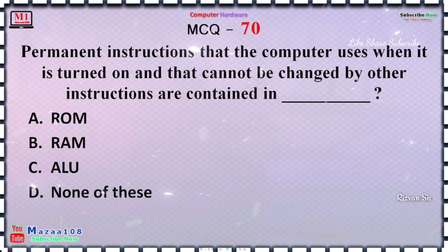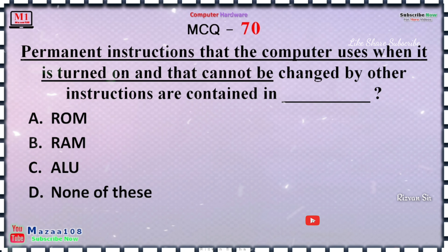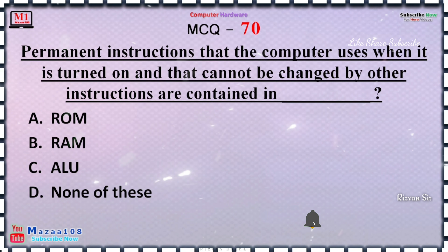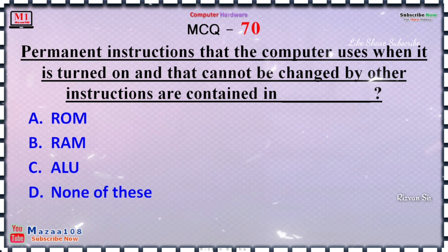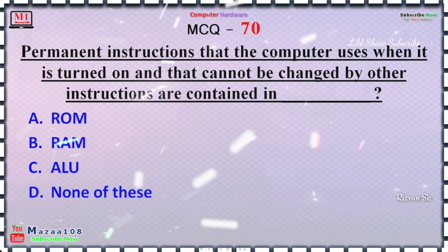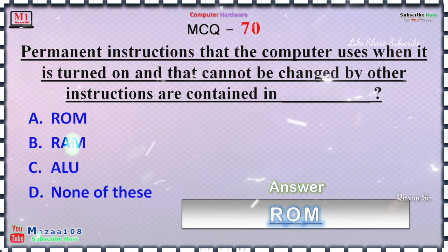Q70. Permanent instructions that a computer uses when it turns on, and that cannot be changed by other instructions, are contained in — option A: ROM, option B: RAM, option C: LU, option D: None of these. The correct answer is ROM.